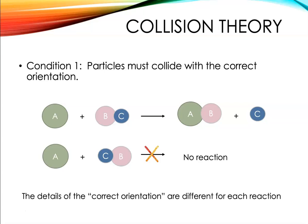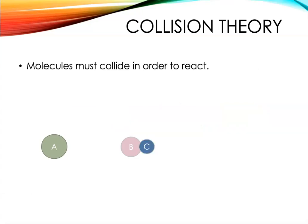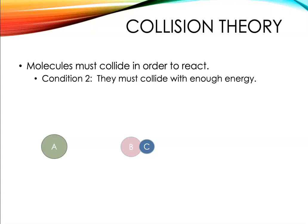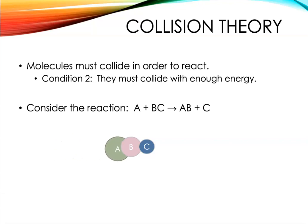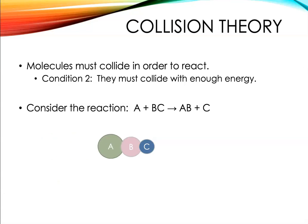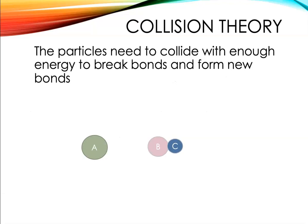The details of the correct orientation are unique to each reaction, and AP Chemistry students aren't usually asked to predict that unless it's a very simple situation. There's a second condition that also has to be met: the particles must collide with enough energy. If A is moving really slowly, it might hit with the right orientation, but if it doesn't have enough energy, nothing's going to happen — they're just going to separate. The particles need to collide with enough energy to break the bonds and form new bonds.